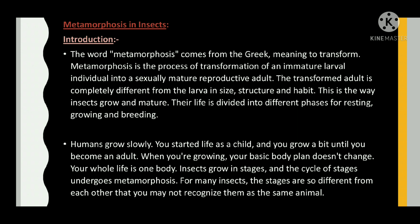Humans grow slowly — you start life as a child and grow gradually until you become an adult. When you are growing, your basic body plan doesn't change; your whole life is one body. Insects, however, grow in stages and the cycle of stages undergoes metamorphosis. For many insects, the stages are so different from each other that you may not recognize them as the same animal.